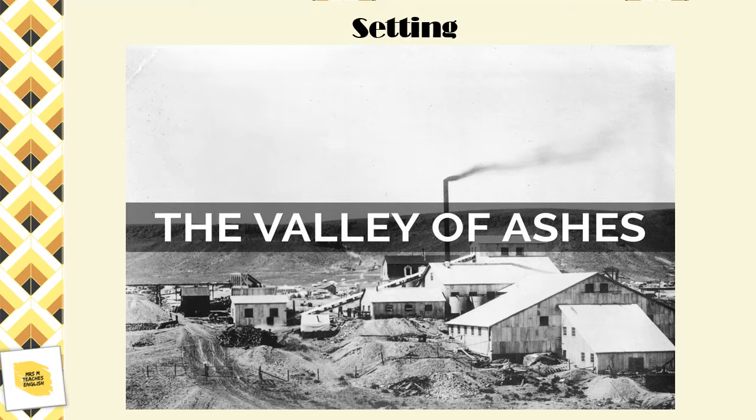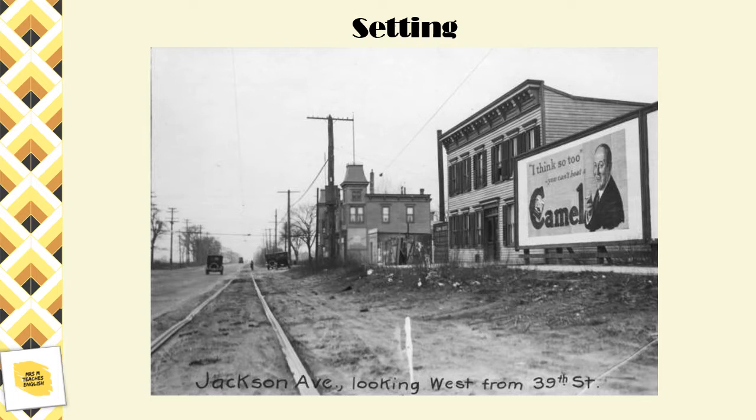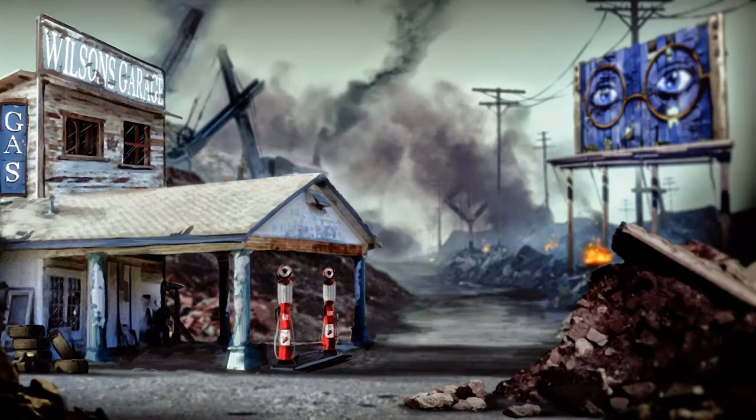It was called the Valley of Ashes as this was where all the detritus of the coal fireplaces of New York City was brought — literally mountains and mountains of ash, giving the area a grey, dusty and dirty appearance. It would have looked something like this in the 1920s, with this being a visual representation of the way it is described by Fitzgerald in the novel.